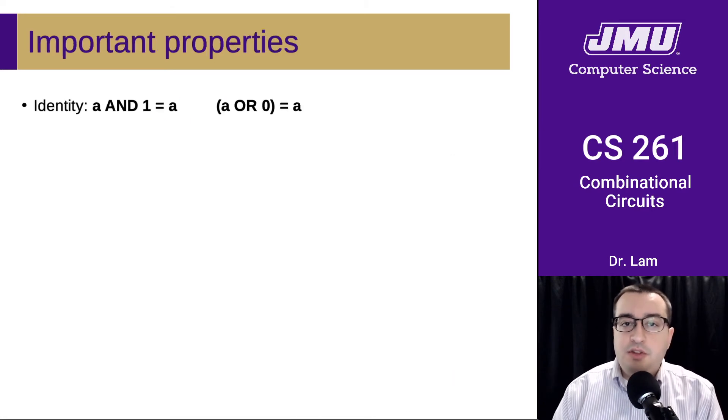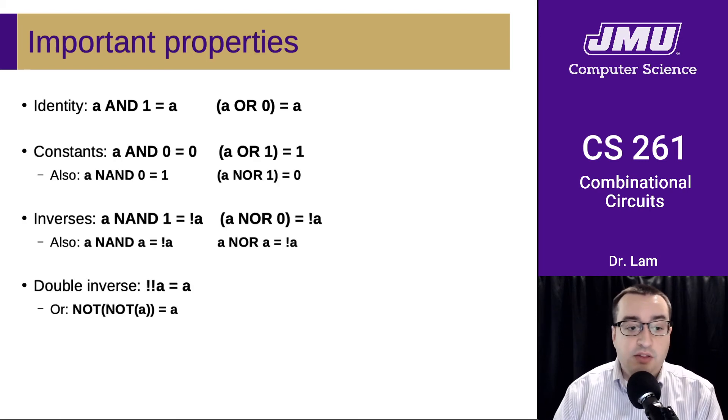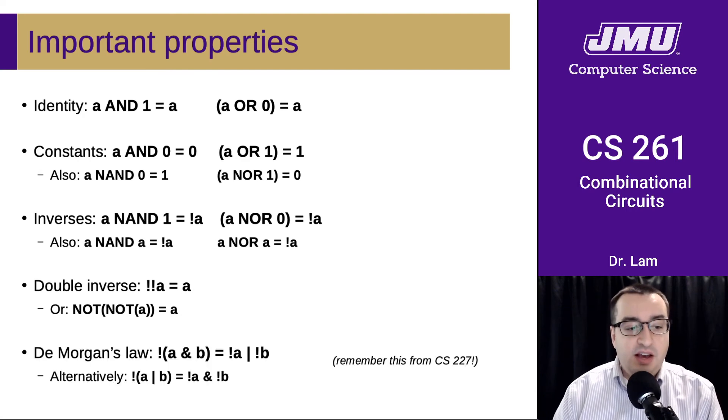So there are a lot of important properties about these. They should all be listed on the binary information reference sheet, which is available on Canvas. So there are some identity properties that are important, some constant properties, some inverse properties, double inverse properties. And of course, DeMorgan's Law, which hopefully you remember from CS227 or whatever the equivalent was that you took.